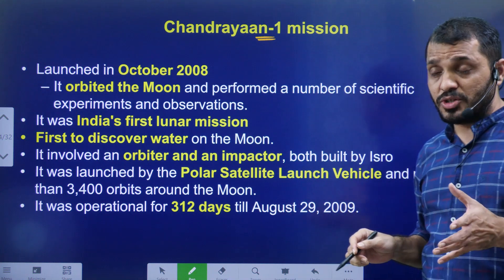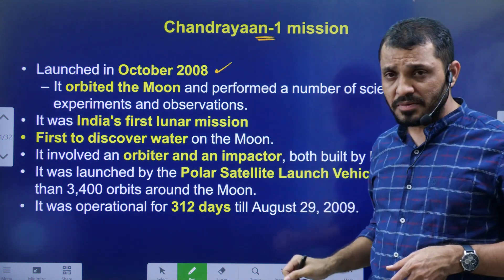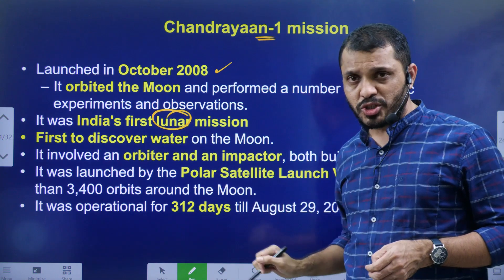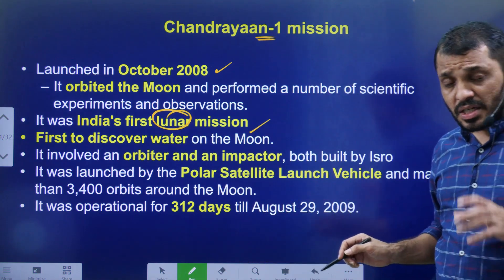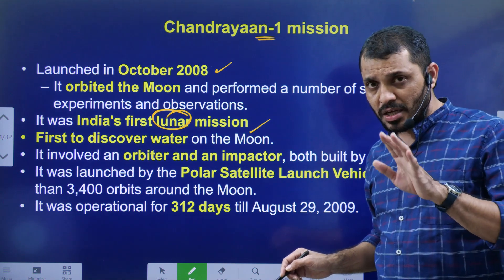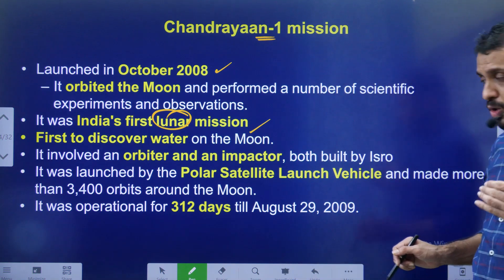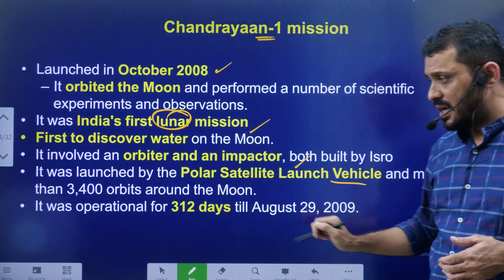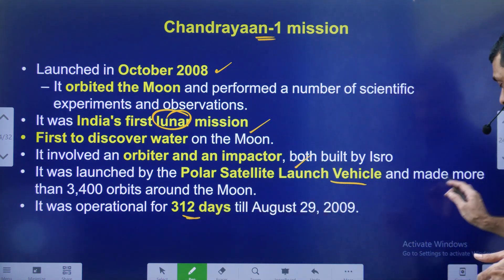Chandrayaan-1 mission details: it was launched in 2008. It orbited around the moon — India's first moon mission. It discovered the presence of water on the moon. It consisted of an orbiter and an impactor, with no lander and no rover. It was launched by PSLV and was operational for 312 days.